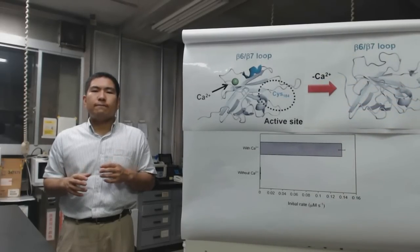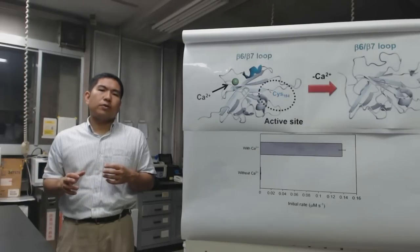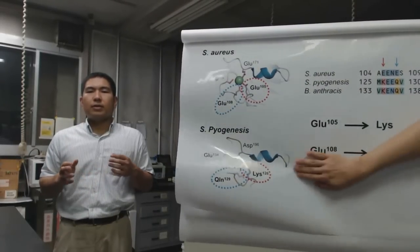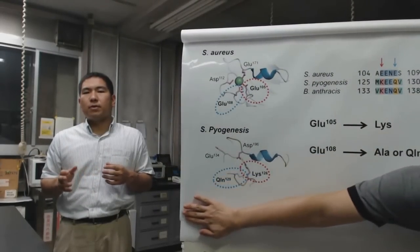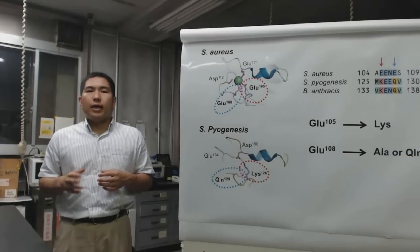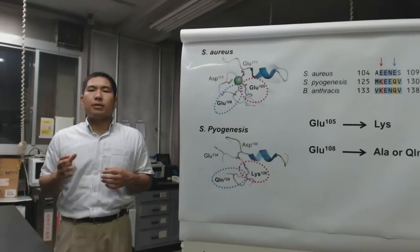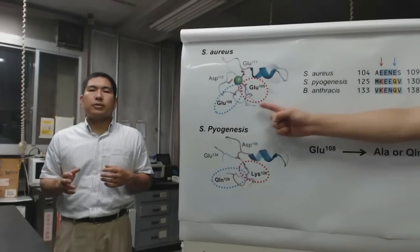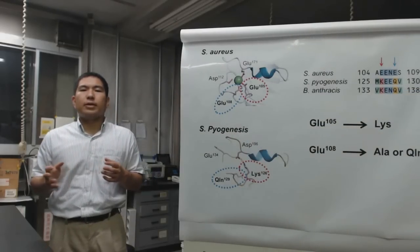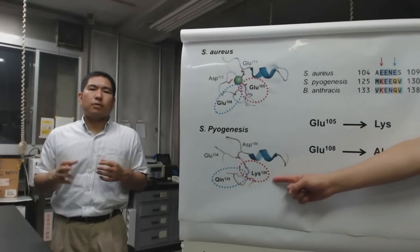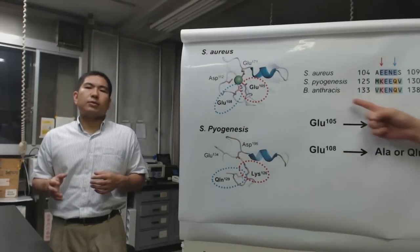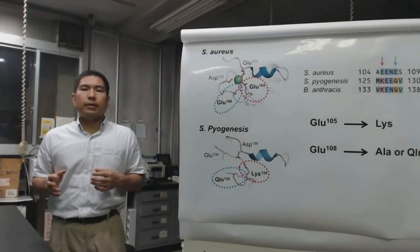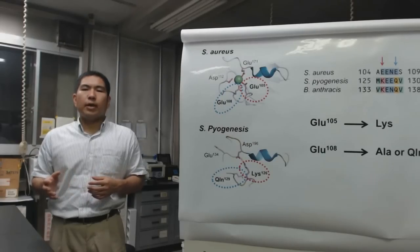Actually, sortase enzymes from other gram-positive bacteria show calcium-independent activities. These facts suggest the calcium dependency is specific to Staphylococcus aureus sortase enzyme. We hypothesized that sortase A can obtain calcium independence by mutagenesis. We found the amino acid residues in the calcium ion pocket are not conserved in sortase enzymes from Streptococcus pyogenes and Bacillus anthracis.